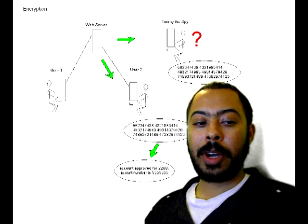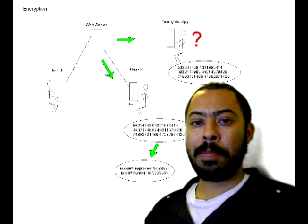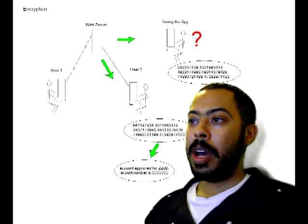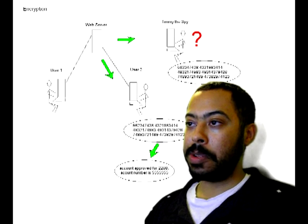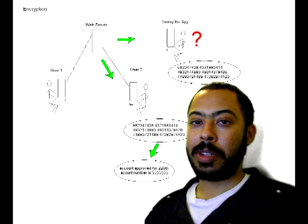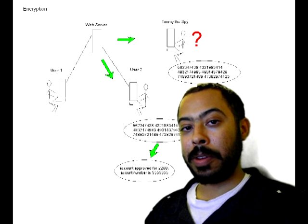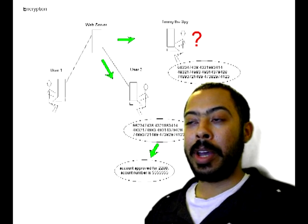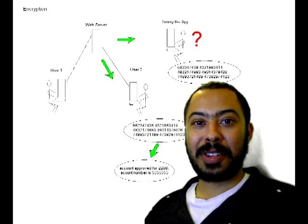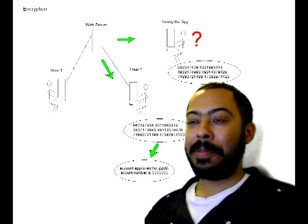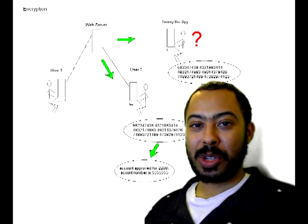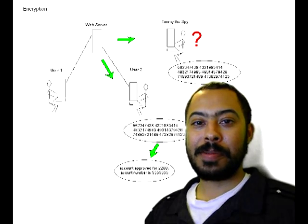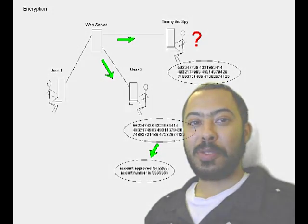In class, we also talked about MD5, which is what we used in our exercise. MD5 is much more complex, and you can see from the keys generated by those algorithms that it's a lot tougher to crack. This demonstrates the importance and the effectiveness of encryption. Thank you for watching.